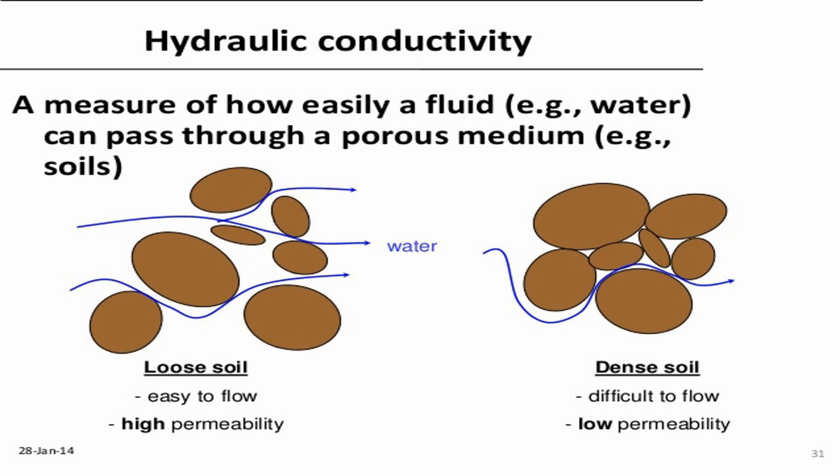This figure shows two different hydraulic conductivities. Hydraulic conductivity measures how easily a fluid like water can pass through a porous medium within soil particles. We have two different types of soil: on the right side, dense or compacted soil; on the other side, loose soil where the particles still have space between them. This space allows water to flow through easily, while in dense soil there is no space, making it difficult for water to flow — meaning low permeability. Loose soil allows easy flow, meaning high permeability.